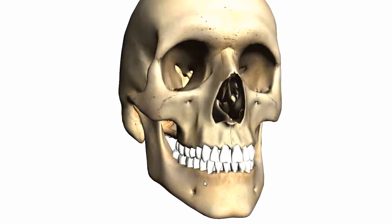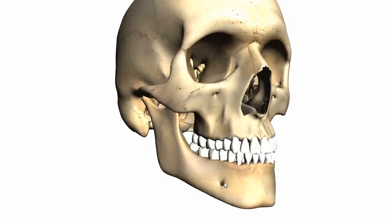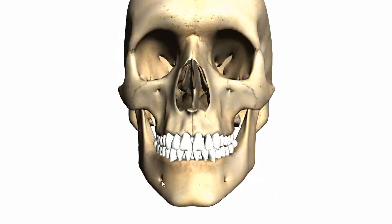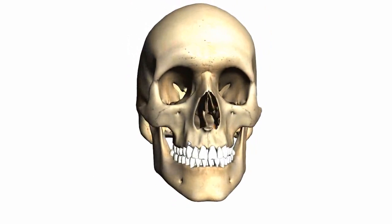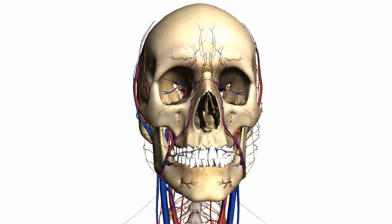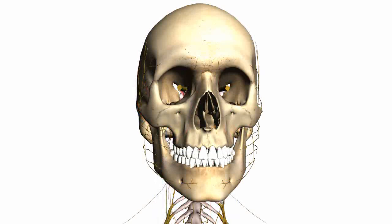This little hole here, which you can see — and there's one on either side — is a foramen, and it's called the mental foramen. You've got a few of these little holes in the skull, and this is where different structures pass through: different nerves and different vessels. I will be doing a tutorial on the foramina.